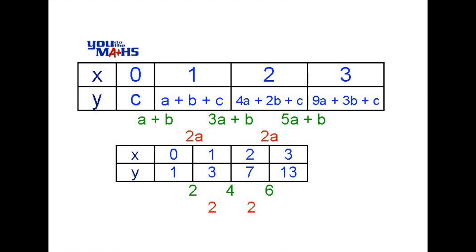We can see that under the x equals 0 c is the only value and that matches 1. The first difference a plus b matches in this case 2. And the second difference 2a matches the second difference in our actual values of 2.